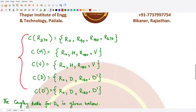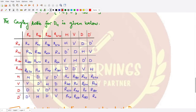Similarly, we can find the centralizers for all the remaining elements r270, h, v, d, and d'. You can calculate all the centralizers and match your answers with these results. You can check the commutativity easily by making use of the Cayley table.